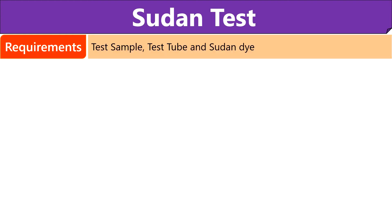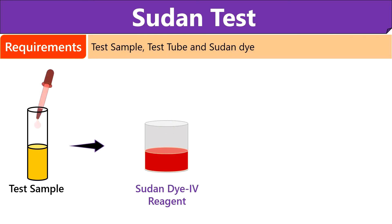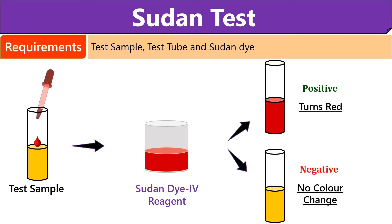To perform the Sudan test, we require test sample, test tube, and Sudan dye. First add 1 ml of the test sample to the test tube, then add a few drops of Sudan dye into the test tube. If the solution turns red in color, then lipid is present and the test is positive. If the solution remains unchanged, then lipid is absent and the test is negative.